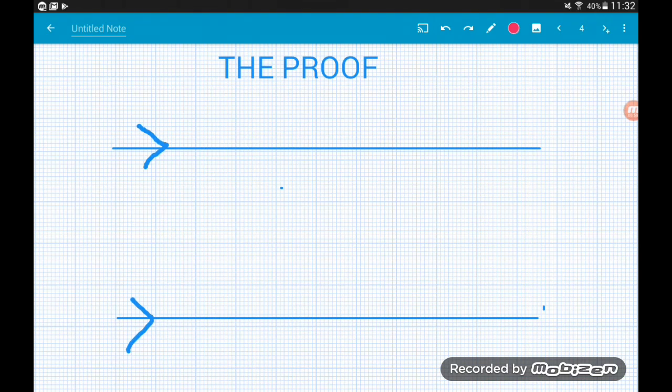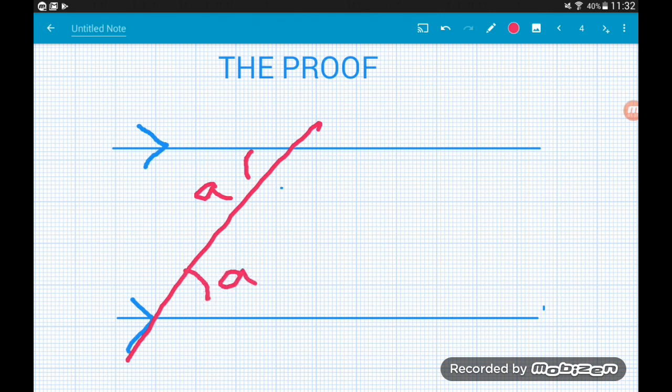So we start off with a pair of parallel lines like this, and what we're going to do is draw any old straight line passing through both. Now we know then by the alternate angle relationship, we know that this angle here, if we call that angle A, then we know that this angle down here is also angle A.